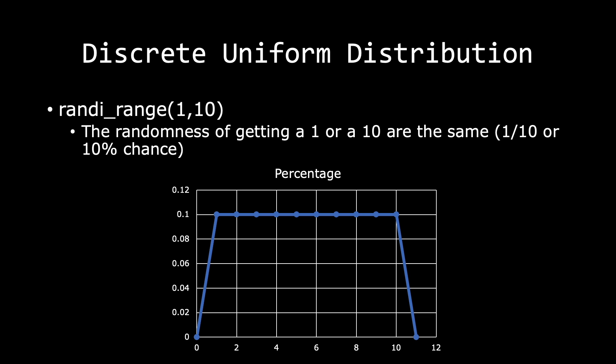For example, if we set the random integer range between the values of one and ten, the randomness of getting a one or a ten and everything in between is the same. We have a one in ten chance of getting any of the integers, which is a ten percent chance.